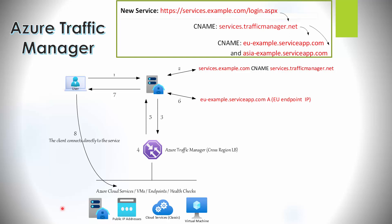If you need instant failover for performance-sensitive services and additional security, you would need to consider Azure Front Door instead. Now, taking a deeper look at the communication between the client and the Traffic Manager: we have a new service at https://services.example.com/login.aspx with a CNAME of services.trafficmanager.net, hosted in two regions — EU and Asia — using Traffic Manager to distribute traffic between them for performance and availability benefits.